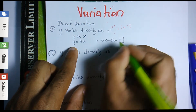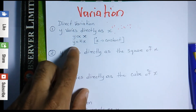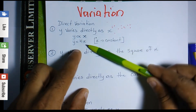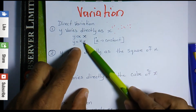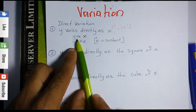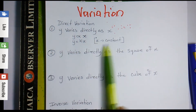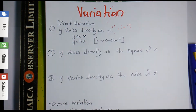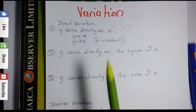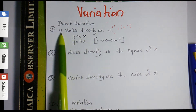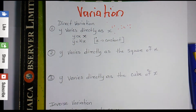Whenever we're doing a variation question and setting it up in equation form, whenever we change the variation sign to an equal sign we need to introduce a constant. The constant doesn't have to be k — it can be any other variable. Also, the variation doesn't have to use x and y; they could give you different letters.